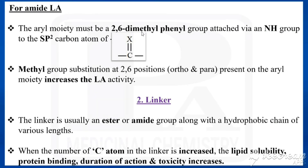For amide type local anesthetics, the aryl moiety must be 2,6-dimethylphenyl — that is, the aryl group with two methyl groups at the second and sixth (ortho) positions attached through an NH group to the sp2 carbon. The methyl groups at these positions increase local anesthetic activity. Regarding the linker, it is usually an ester or amide along with a hydrophobic chain of various lengths. When the number of carbon atoms in the linker is increased, lipid solubility, protein binding, duration of action, and toxicity are all increased.